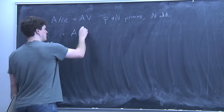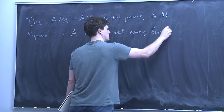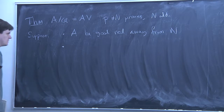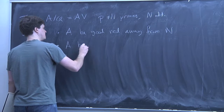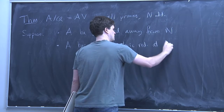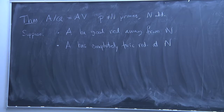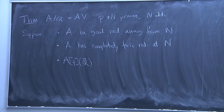Suppose you have the following conditions. First of all, A has good reduction away from N. Second, at N we require that A has completely toric reduction. Third, the condition is on the P-torsion of A as a Galois representation: if you look at the P-torsion of A on Q-bar points, that's a representation of the Galois group. The condition is that the irreducible constituents of this representation are all just the trivial representation or the cyclotomic character.